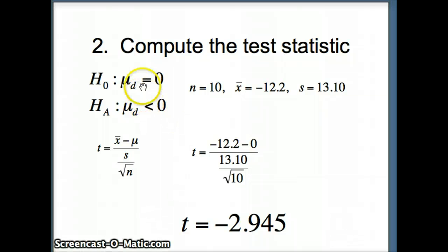So here's all our information. Mu sub d equals 0 versus mu sub d is less than 0. There's our test statistic, n, x bar, and s. t is x bar minus mu divided by s over root n. t is x bar, negative 12.2, minus mu, minus 0, divided by s, 13.1 over root n over root 10. And the result I get here is negative 2.945. So that is my test statistic. That is a large negative test statistic. I feel much better about this one than the previous problem.